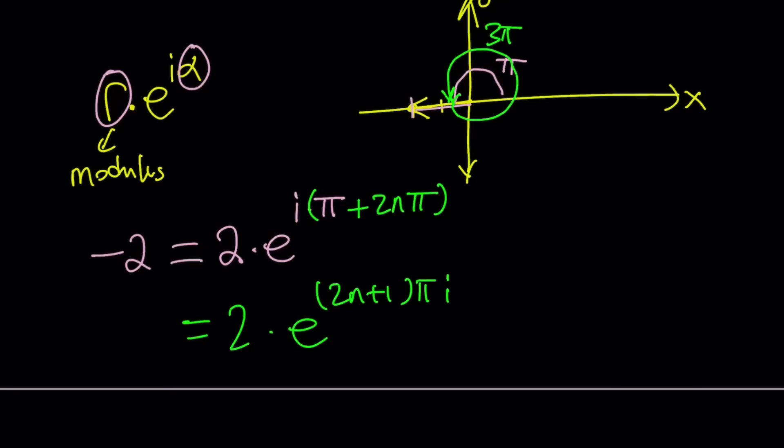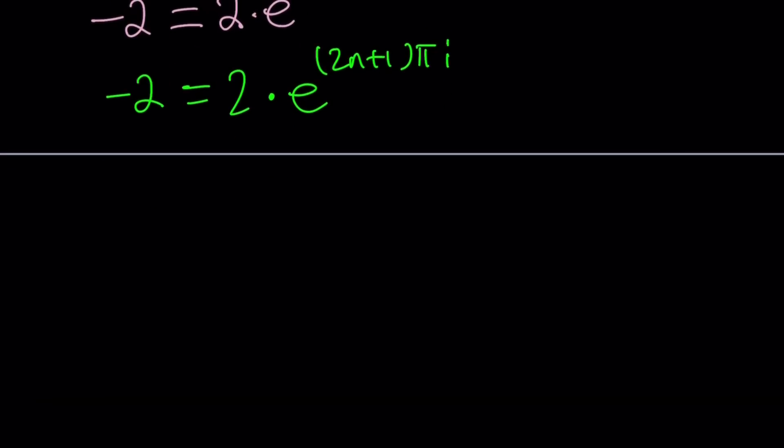That is our number, negative 2. And we're going to set it equal to 4 to the power of x. Let's go ahead and do it, and then we're going to be doing a little bit of logging on both sides, so on and so forth. So 4 to the power of x equals 2 times e to the power 2n plus 1 pi i. You could probably write the i first, and it's probably going to look a little better. i times 2n plus 1 pi.